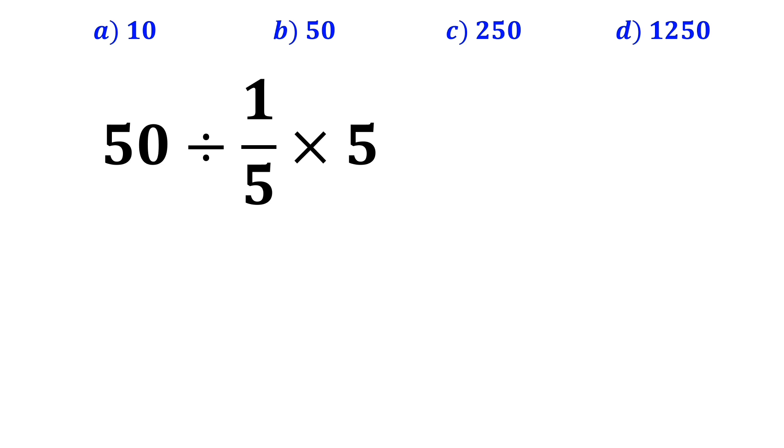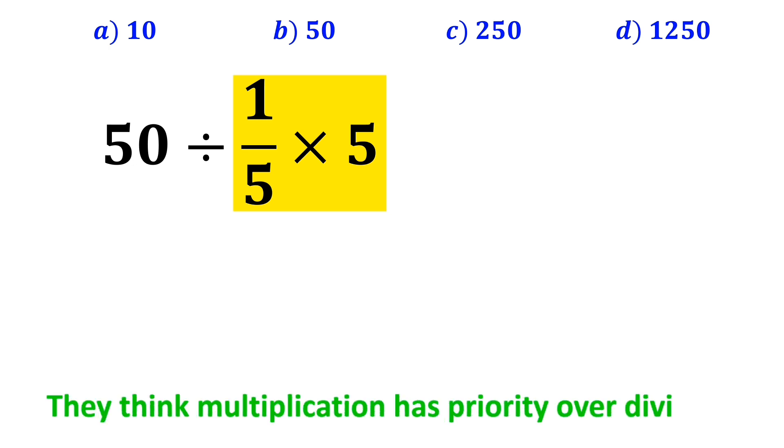At the beginning of solving this question, many people go straight to the expression 1 over 5 multiplied by 5, which I have highlighted in yellow, because they think multiplication has priority over division.